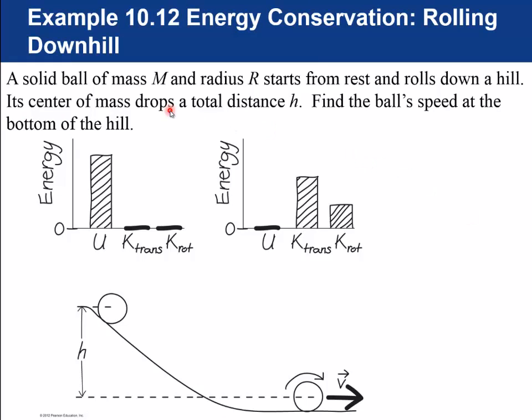Let's do an example. Example 10.12 is energy conservation, rolling downhill. A solid ball of mass m and radius r starts from rest and rolls down a hill. Its center of mass drops a total distance h. Find the ball's speed at the bottom of the hill.